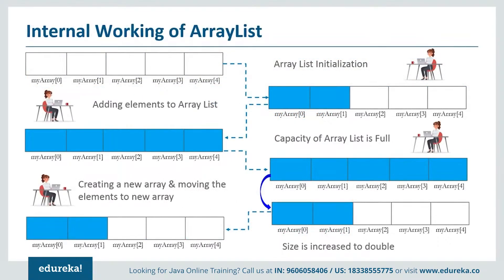Now let's move further and see the internal working of ArrayList. First we create an empty array and then go on adding elements. Once the size of the array is full — that is, if the size of the current elements is greater than the maximum size of the array — then we have to increase the size. Since the size of the array cannot be increased dynamically, what happens internally is a new array is created and the old array is copied to the new array. So automatically the size will be doubled, and you can go on adding elements as required.